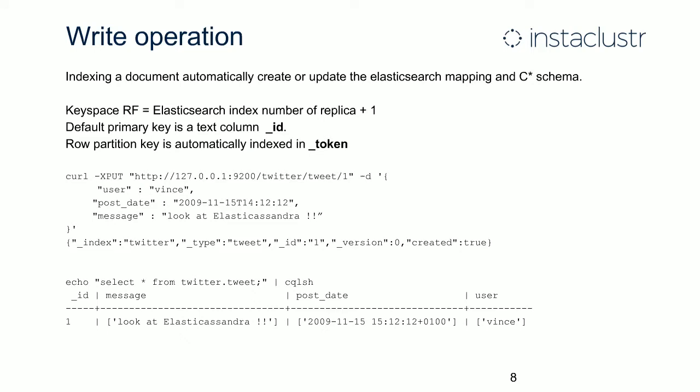Here is an example of a REST PUT request to insert a new document. It's a JSON document with many fields — it can be whatever you want: text, numbers, dates, or structured objects. When you insert a document, you get a response from Elasticsearch confirming the document was created. You can also see the resulting request in the Cassandra layer — a table with one column per field and a perfect mapping between all Elasticsearch fields and the Cassandra table.